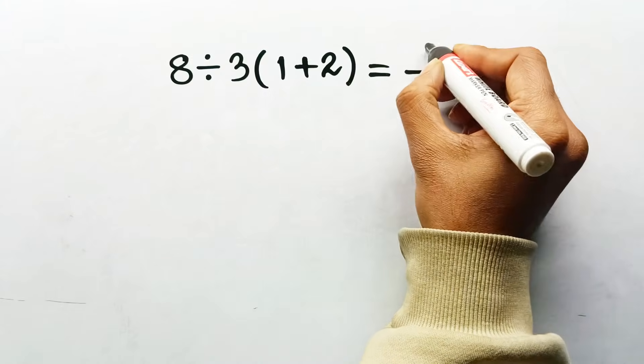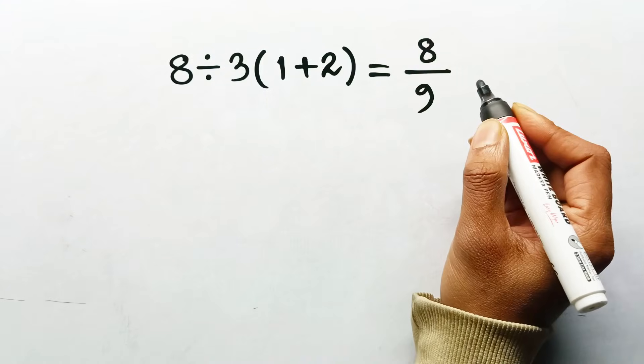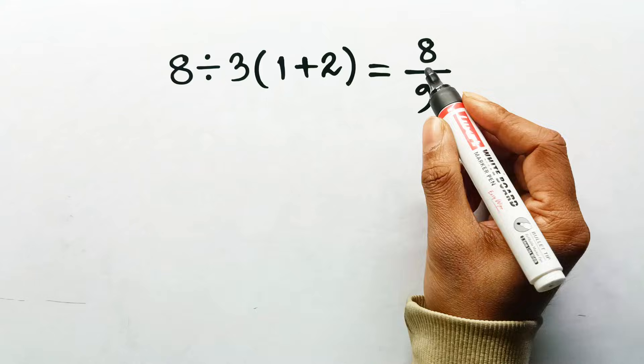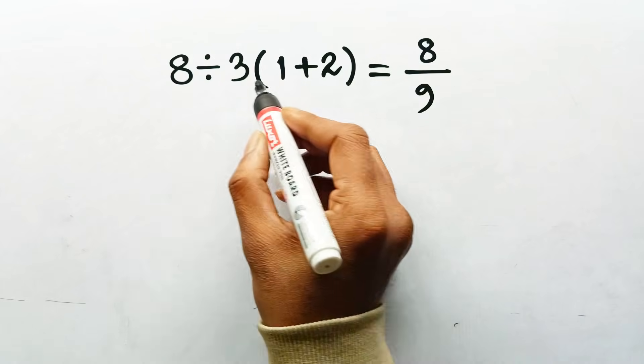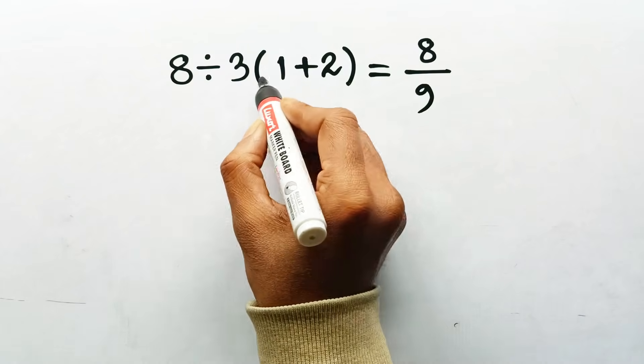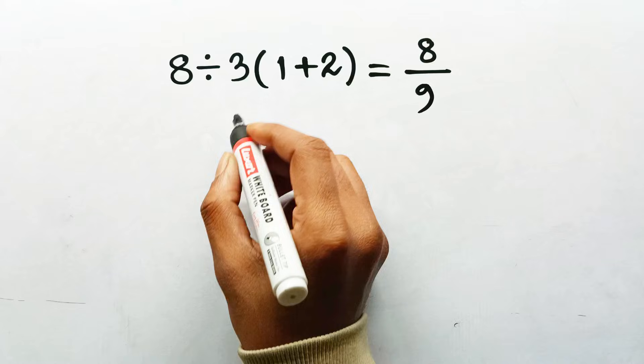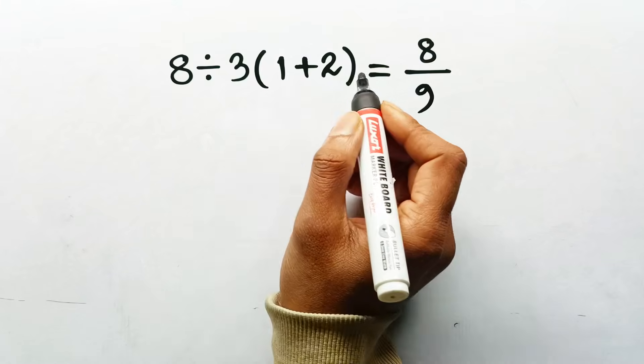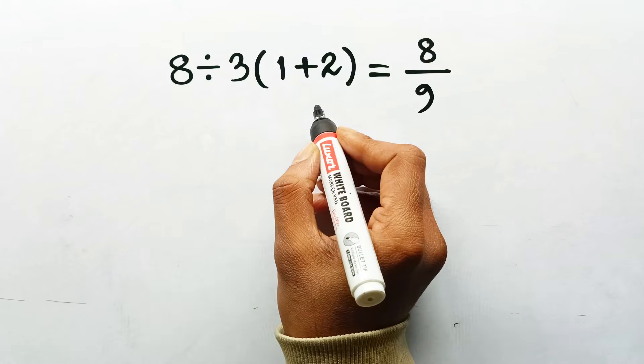You'd bet your lunch money it's 8 over 9, but math doesn't play that way. All right, take a look at this one right here. 8 divided by 3 times the quantity 1 plus 2. Don't overthink it. Just tell me what your brain screamed instantly.